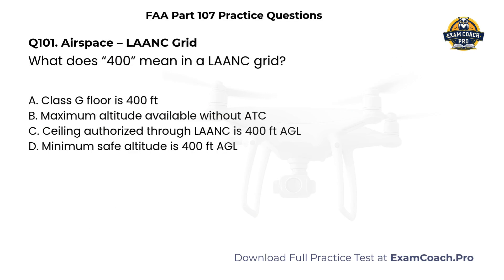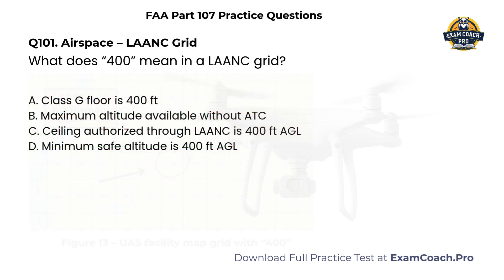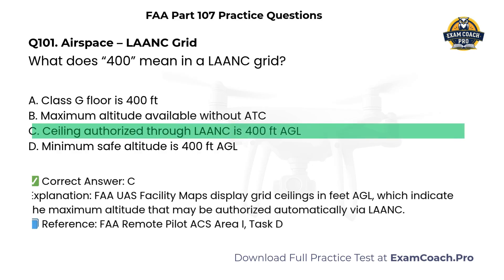Airspace. LAANC Grid. Refer to UAS Facility Map Grid with number 400. What does 400 mean in a LAANC Grid? A. Class G floor is 400 feet. B. Maximum altitude available without ATC. C. Ceiling authorized through LAANC is 400 feet AGL. D. Minimum safe altitude is 400 feet AGL. Correct answer: C. FAA UAS Facility Maps display grid ceilings in feet AGL, which indicate the maximum altitude that may be authorized automatically via LAANC.